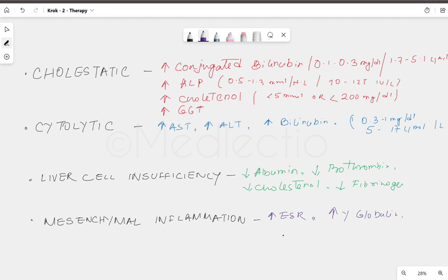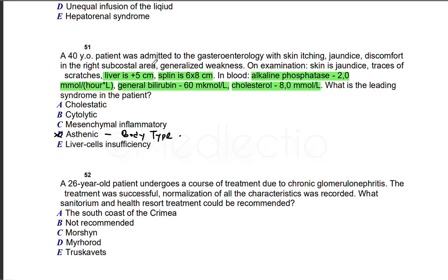For mesenchymal inflammation, as it is inflammation, we have the inflammatory markers: increased ESR, increased gamma globulin, and increased CRP (C-reactive protein).